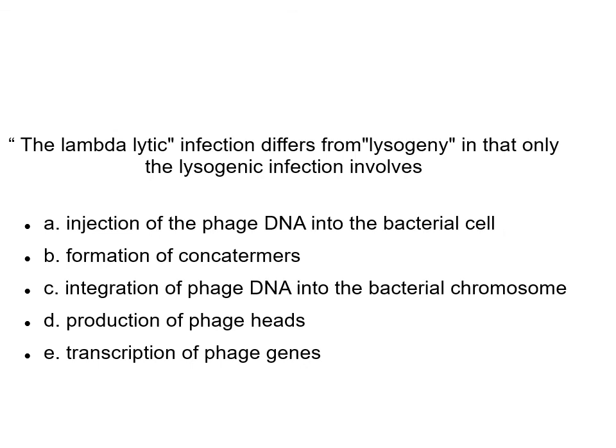Quiz question: Lambda lytic infection differs from lysogeny in that only the lysogenic infection involves: A) injection of phage DNA into the bacterial cell, B) formation of concatemers, C) integration of phage DNA into the bacterial chromosome, D) production of phage heads, or E) transcription of phage genes. The answer is C — integration of phage DNA into the bacterial chromosome.